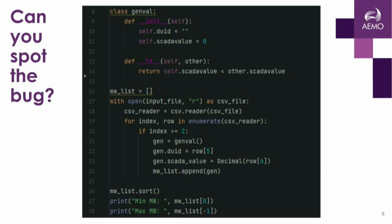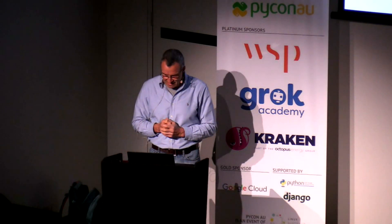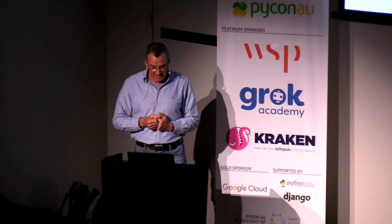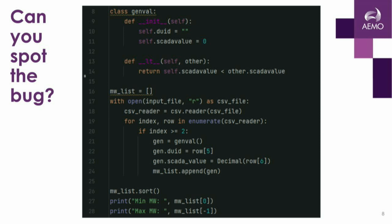So what we need is a crutch to lean on to help us not make this error. We'll introduce a class structure to help us avoid that error. The error was that we're adding numeric values as strings to a list and sorting as strings — strings and numbers sort differently. So I've created a class called GenVal with two attributes: DUID, a string, and SCADA value, a number.